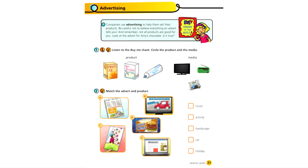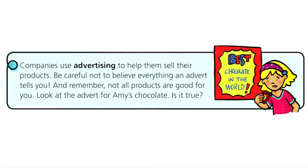Advertising. Unit 5, page 77. Listen, read and say. Companies use advertising to help them sell their products. Be careful not to believe everything an advert tells you. And remember, not all products are good for you. Look at the advert for Amy's chocolate. Is it true?